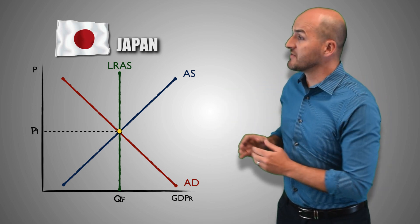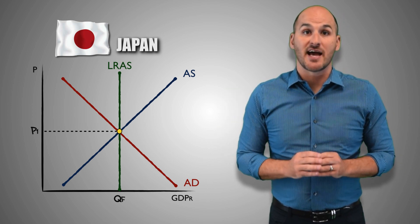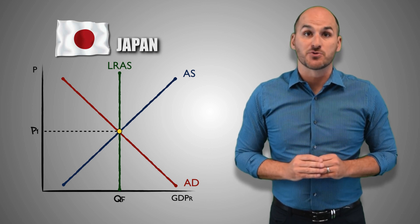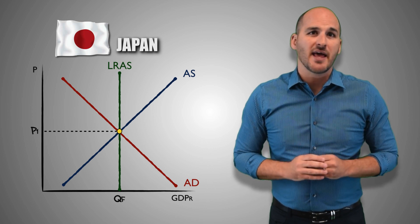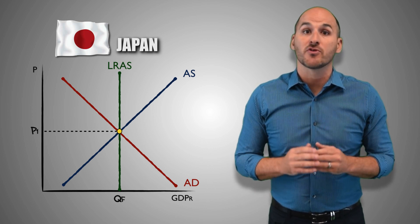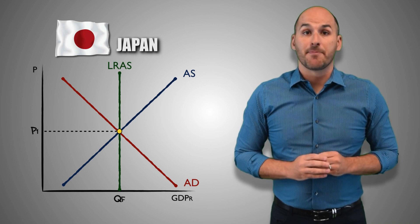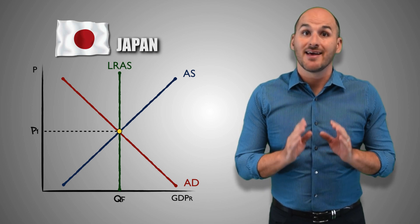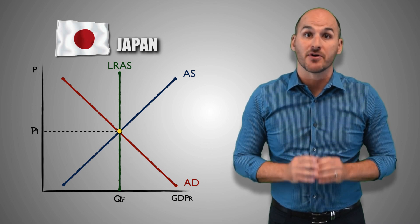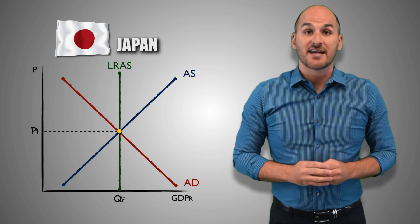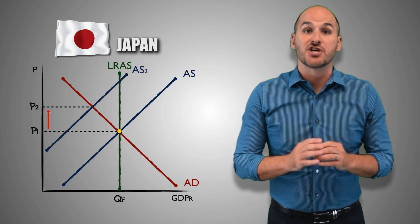Suppose the Japanese economy is at long-run equilibrium, and the Japanese government places a 5% excise tax on plastic. Plastic is a vital resource in the production of goods and services in the Japanese economy, and a 5% excise tax means Japanese firms will find it harder to afford the plastic needed to produce goods and services. Firms throughout the Japanese economy will have fewer resources to work with, and as a result, domestic firms will produce lesser quantities of real GDP output at every price level, causing a decrease in short-run aggregate supply.